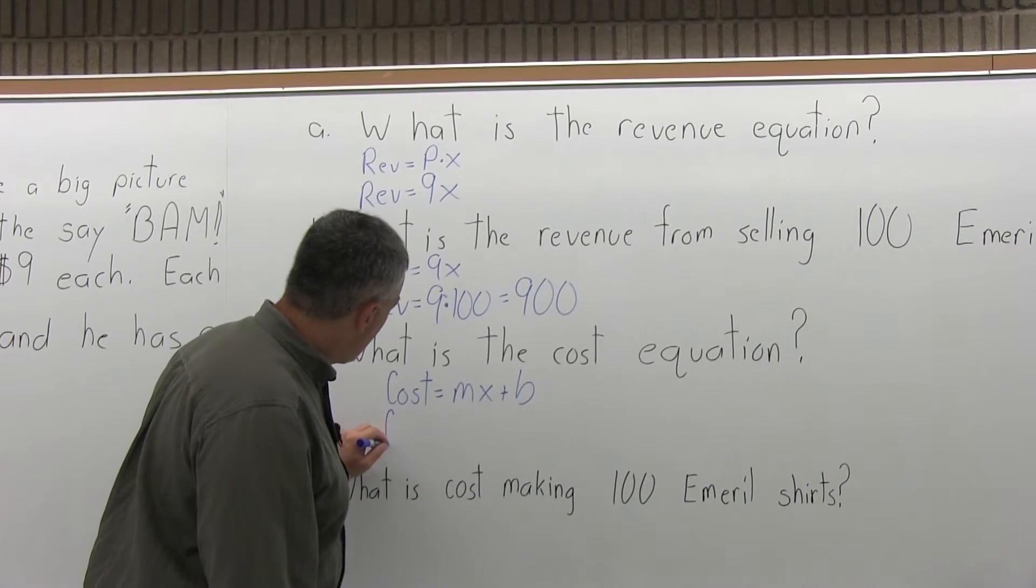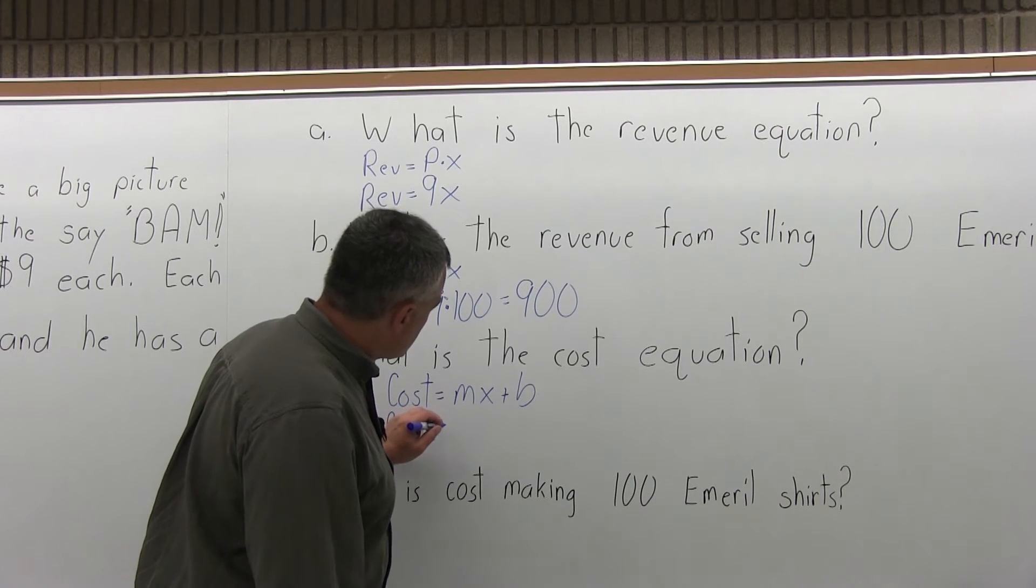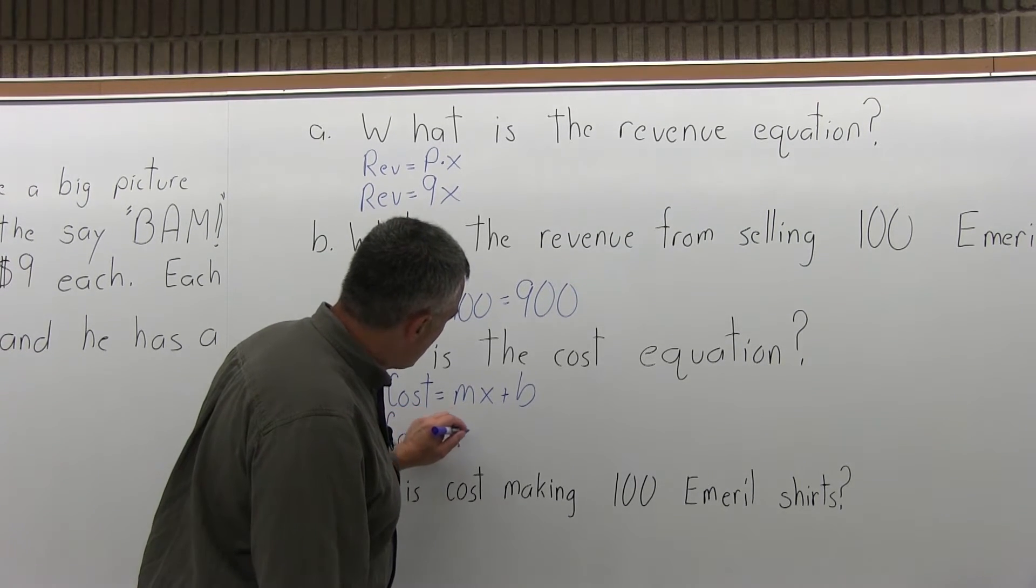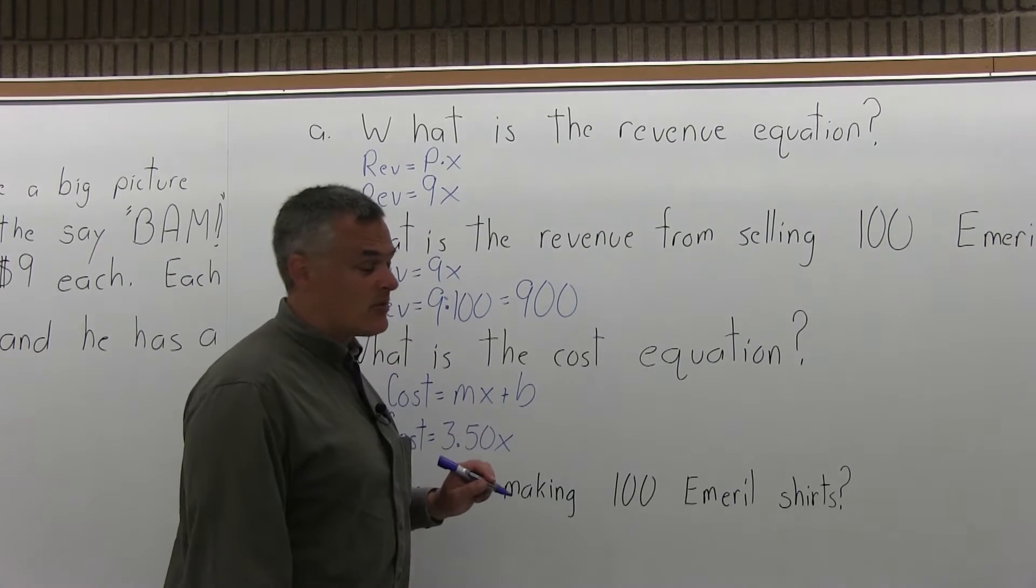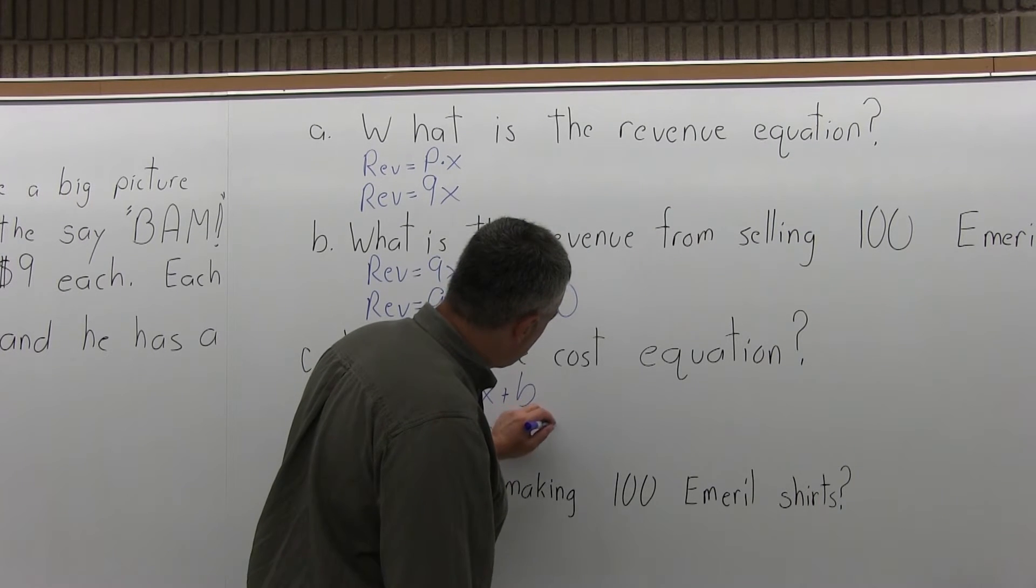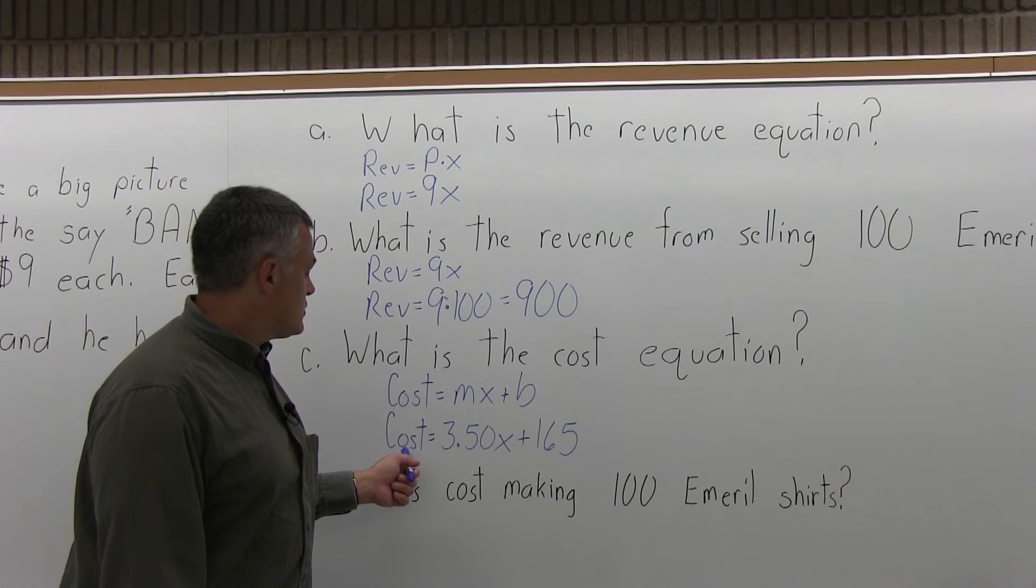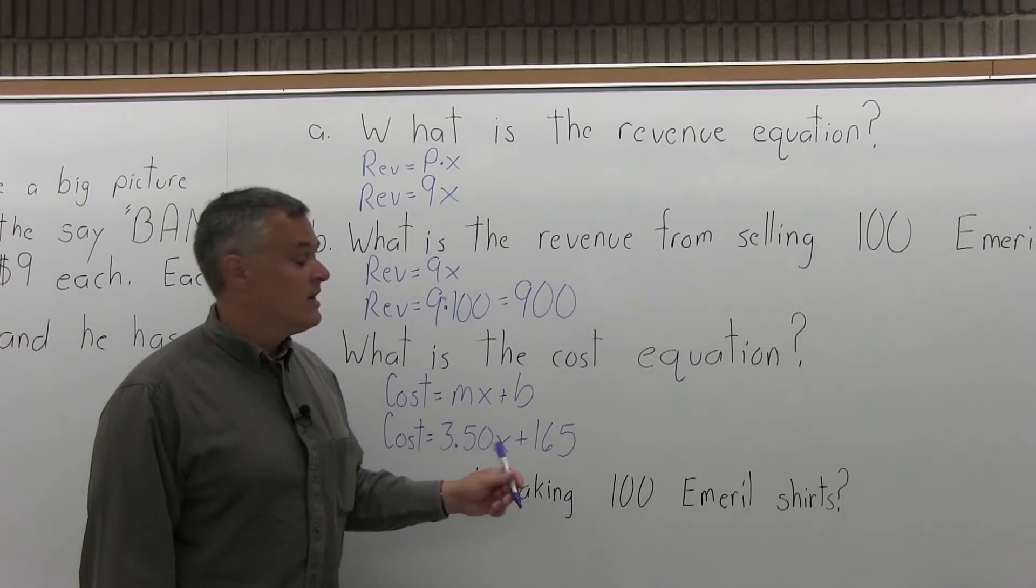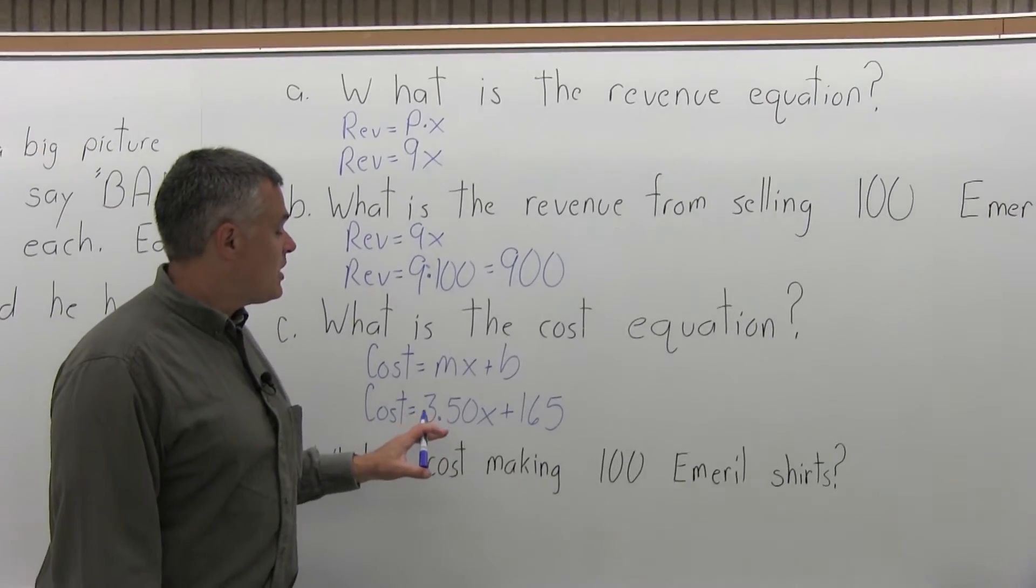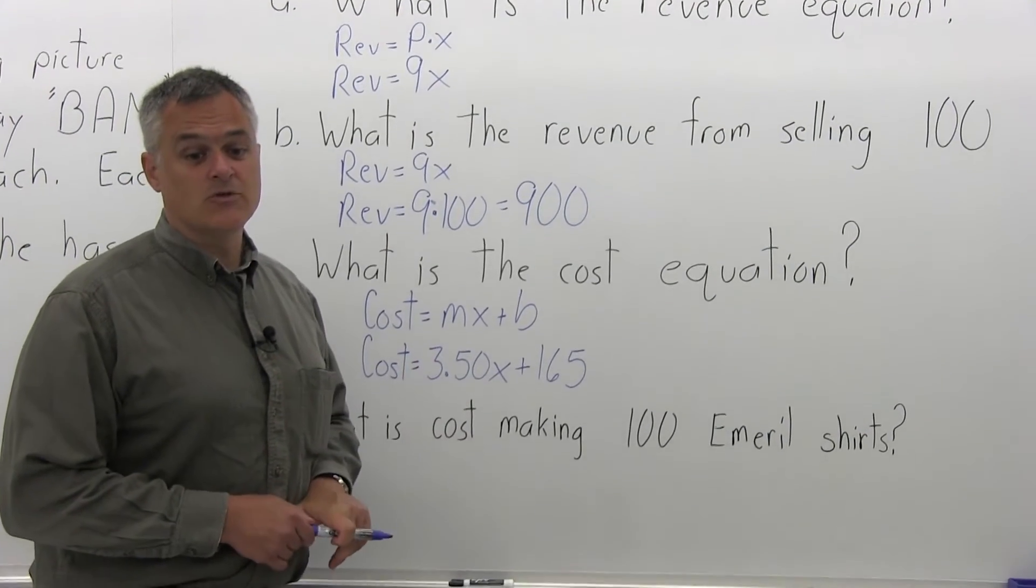So for this particular problem, the cost equation is M, the cost per item is $3.50, X represents the number of items, plus B, the fixed cost is $165. So the cost equation is cost equals $3.50 times X plus $165. From this, you can figure out the cost of as many t-shirts as you're interested in.